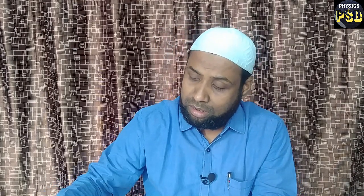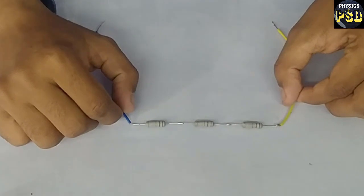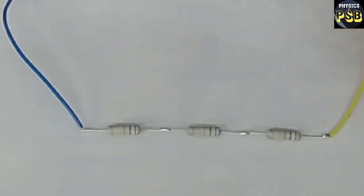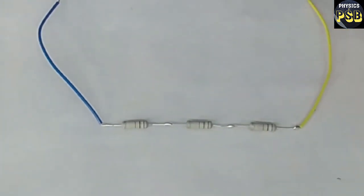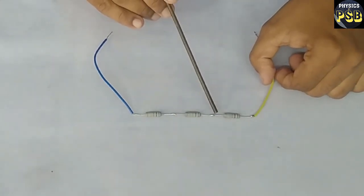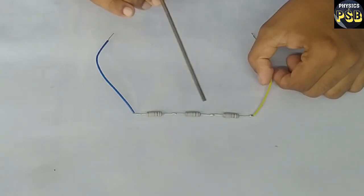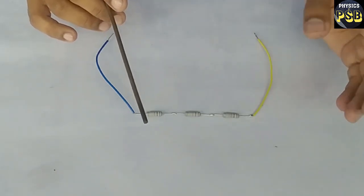When we say resistors it might be a bulb, a filament, or even a device. Here I have taken three resistors. When we connect the resistors in this manner, we call the combination a series combination. In a series combination, we connect one end of the resistor to another end of the second resistor. This is end to end connection, referred to as series connection.